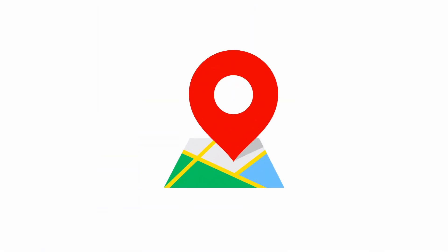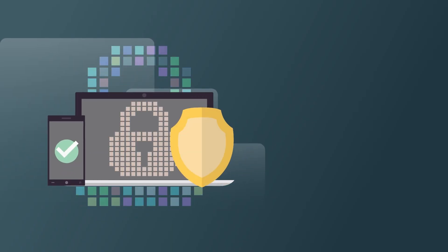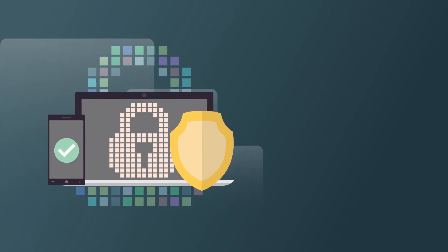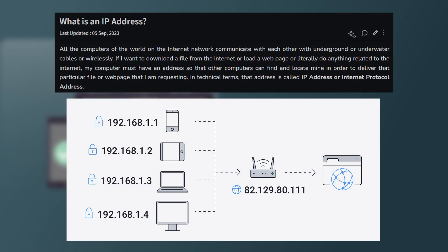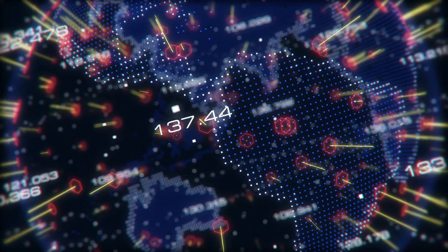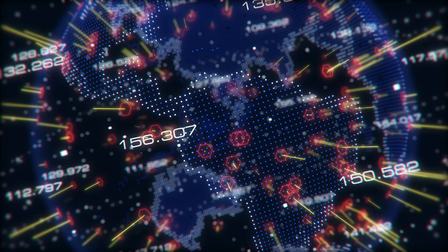Think of an IP address like a home address for your device. Just like a house needs an address for mail to be delivered, a device on a network needs an IP address to send and receive data. These addresses are assigned uniquely to each device, helping data find its way through a vast network. IP addresses come in two versions: IPv4 and IPv6.